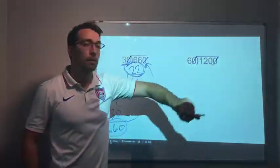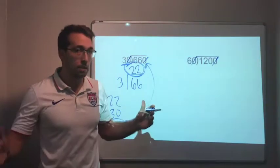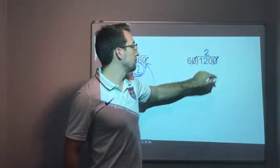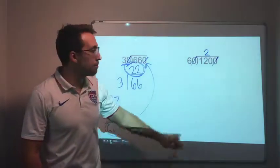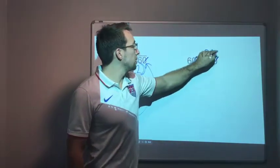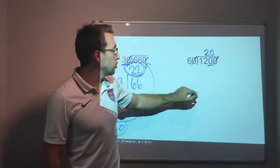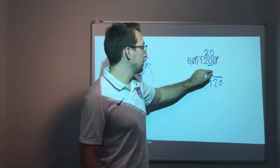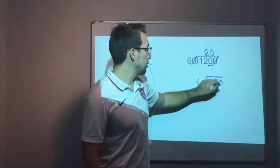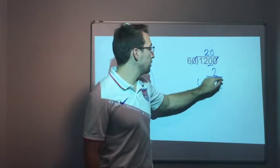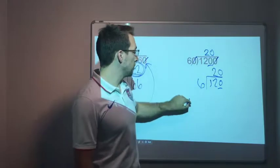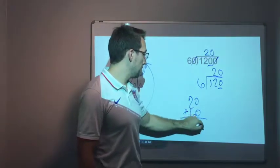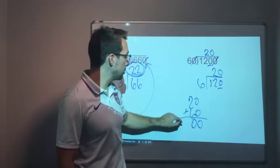1200 divided by 60. Six goes into 12 two times, right? Two times, and then there's one zero. So what's my answer? 20. And look, 120 divided by 6 is, 6 goes into 12 two times, I have one zero, 20.